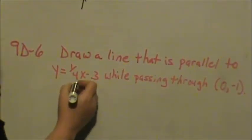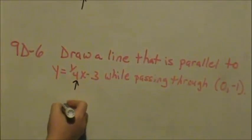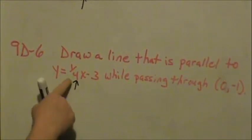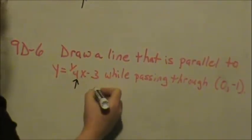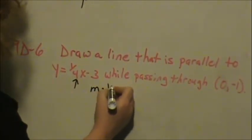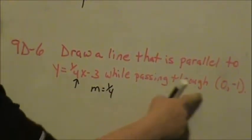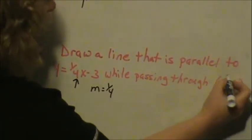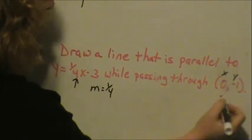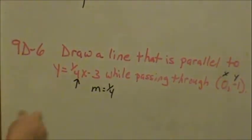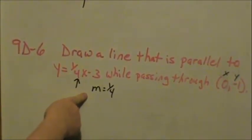Here is our slope for this line, 1 fourth. So in order to be parallel to that, we want a slope of 1 fourth as well, and we want to go through this point. 0 negative 1, remember that's our x coordinate, that's our y coordinate. I'm going to do this problem two different ways. First, I'm going to do it by graphing.